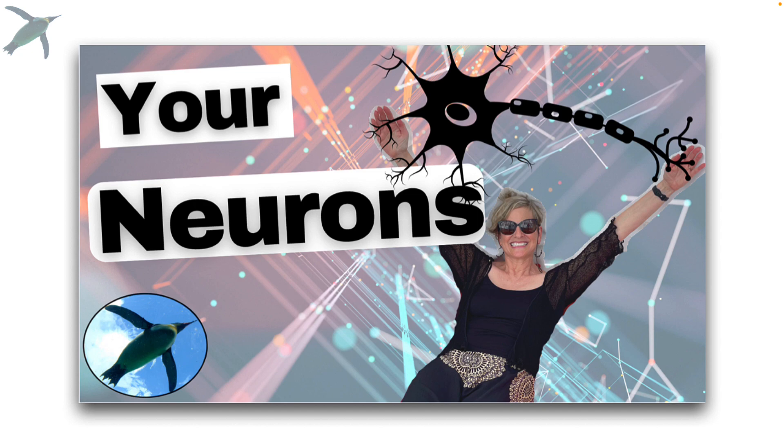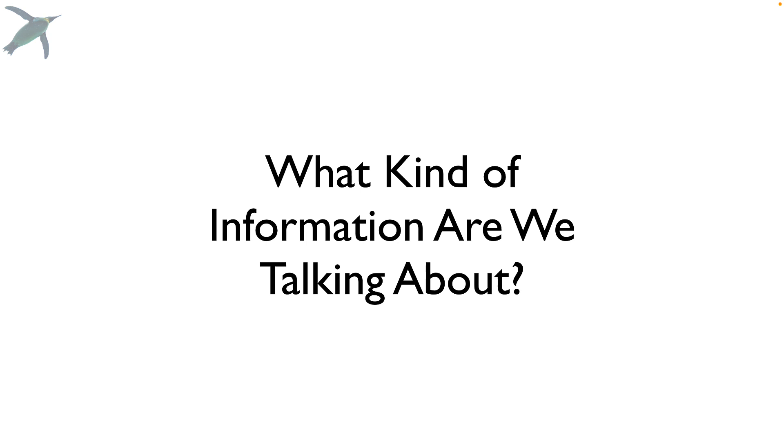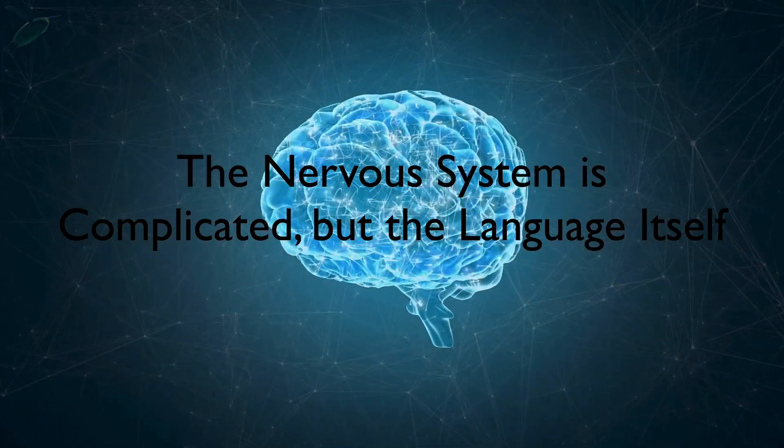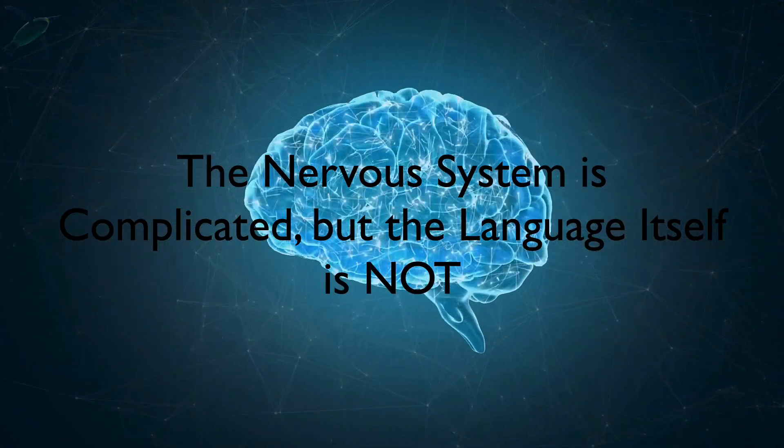Now, if this is completely unfamiliar to you, please watch the video Your Neurons First, because this video will answer the question, what kind of information are we talking about here? Okay, so the nervous system is complicated, but surprisingly, the language itself is not.